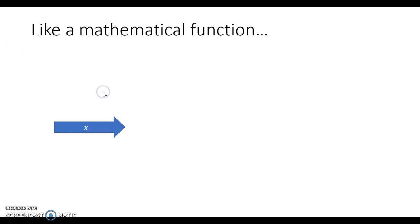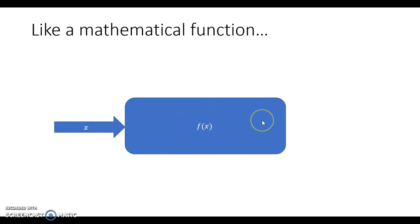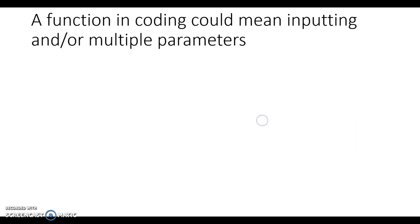Functions in computer programming are like mathematical functions. You have some input, that input goes into a black box — something that's going to manipulate X in some way. We say F acts on X, operates on it, and then creates an output called Y. That's how we've traditionally thought about this. Now function coding could mean inputting and/or outputting multiple parameters.